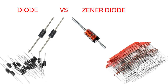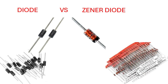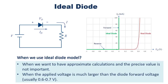Welcome back to the channel. In today's video, we will compare the two most important diodes in electronics. Have you ever wondered why your phone's charger always gives the same voltage, or how AC power is turned into DC? The secret lies in two powerful components: the normal diode and the zener diode. Let's break them down clearly.